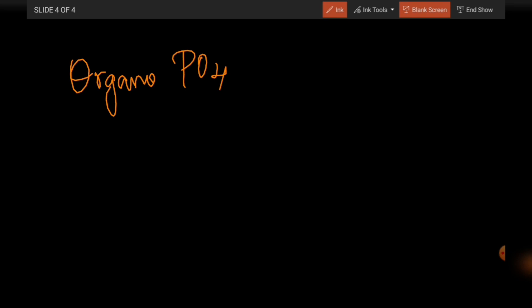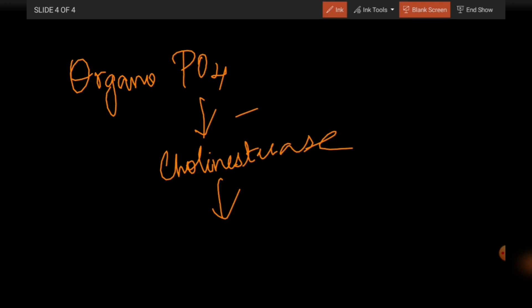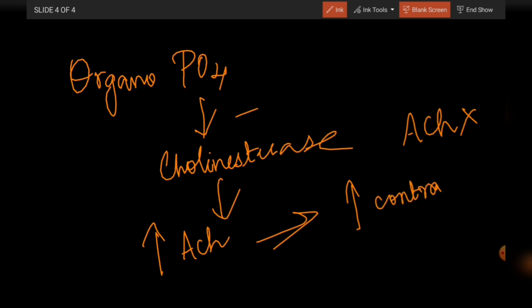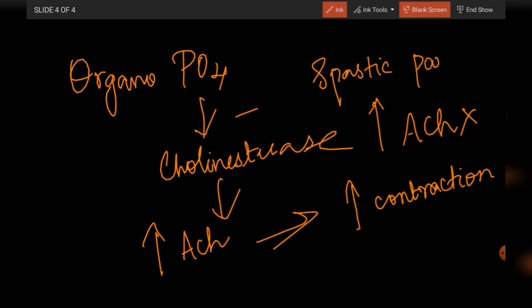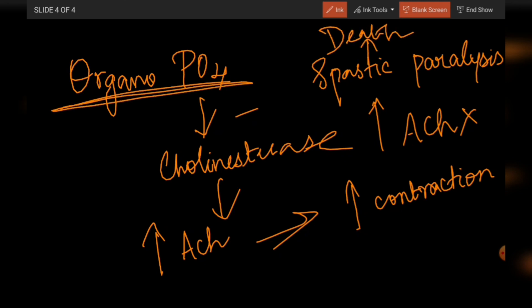Regarding organophosphorus poisoning: organophosphorus inhibits cholinesterase, the enzyme that breaks down acetylcholine. When cholinesterase is inhibited, acetylcholine will not be broken down, leading to increased acetylcholine in the synaptic cleft. This causes continuous contraction. In the respiratory tract, there will be contraction of the skeletal muscles lining the respiratory tract, leading to spastic paralysis of the respiratory skeletal muscles, which can lead to death. This is the reason for death in organophosphorus poisoning.